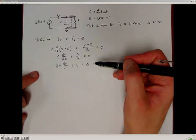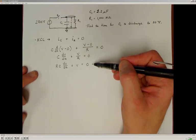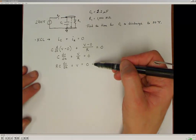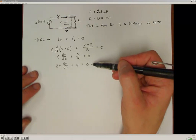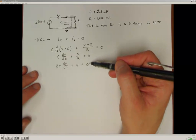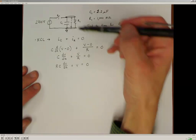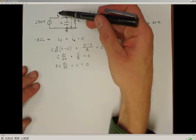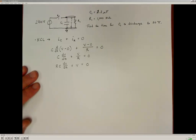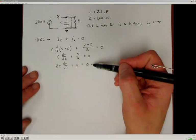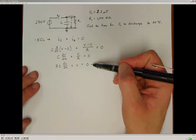You'll recognize that this is a first-order differential equation. It's a homogeneous differential equation because there's no term on the right-hand side — no forcing function — which is consistent with the fact that we're actually removing the input into the system, so no energy is being added. Therefore, we're going to be solving for the free response or the homogeneous case.